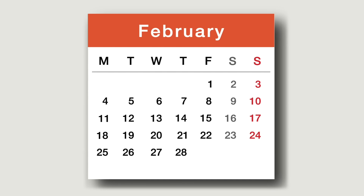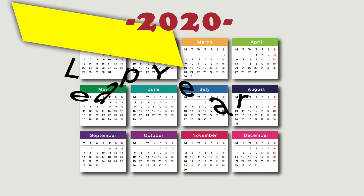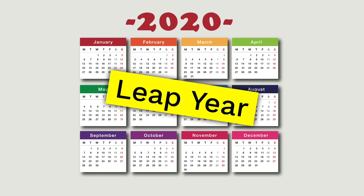The month of February always has 28 days, except every four years we add one more day on the end — a February 29th. In other words, we add an extra day to our whole year. When this happens, this is what we call a leap year.